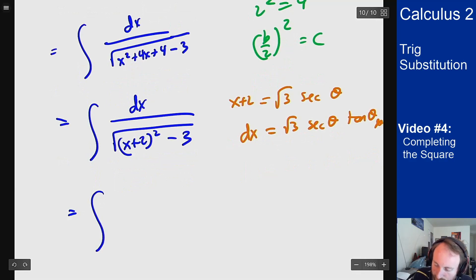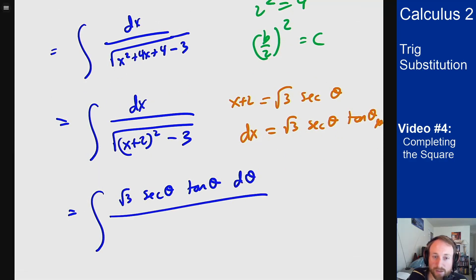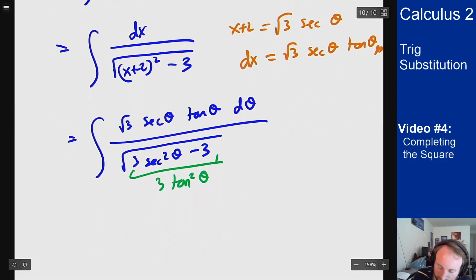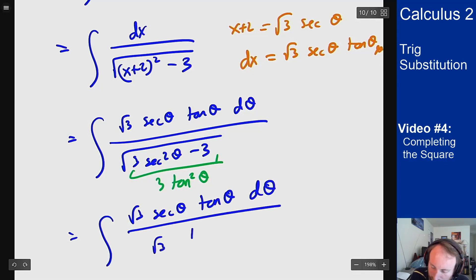Integral the dx is root 3 secant theta tangent theta d theta. For the bottom, x plus 2 squared becomes 3 secant squared theta minus 3. This here becomes a 3 tangent squared theta. So I get integral of root 3 secant theta tangent theta d theta divided by root 3 tangent theta. Root 3 is cancelled, tangent theta is cancelled. I'm left with just secant.